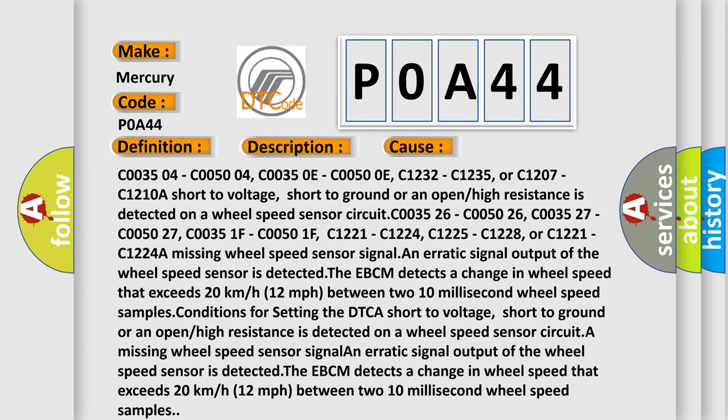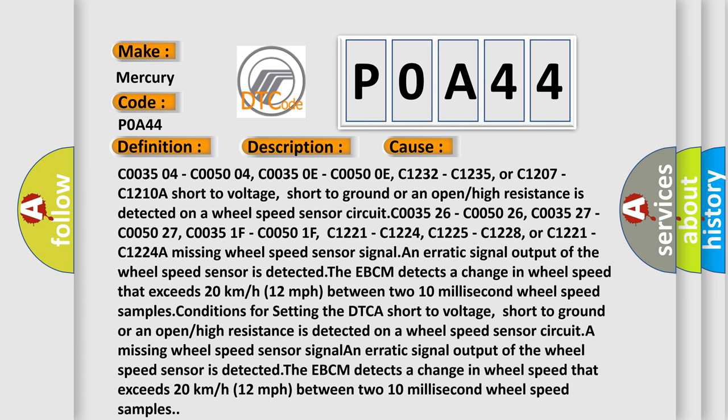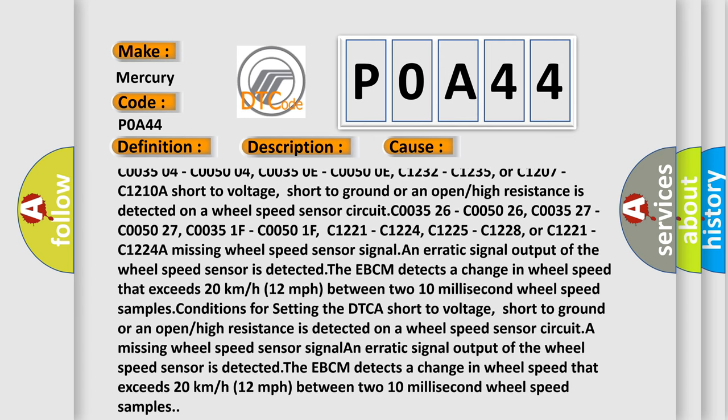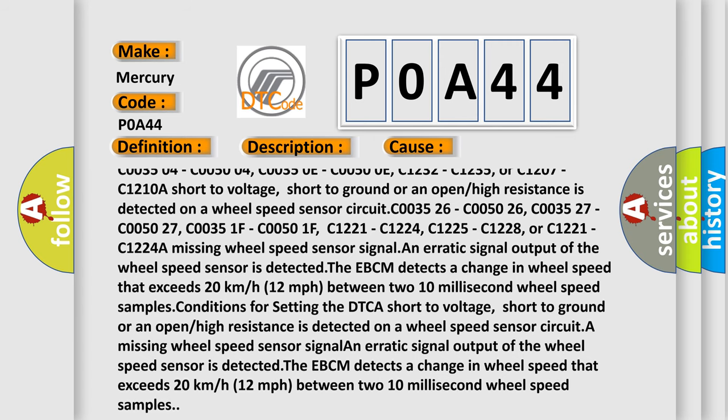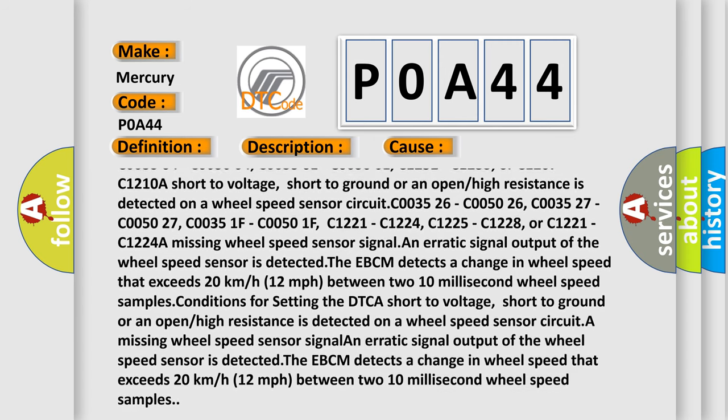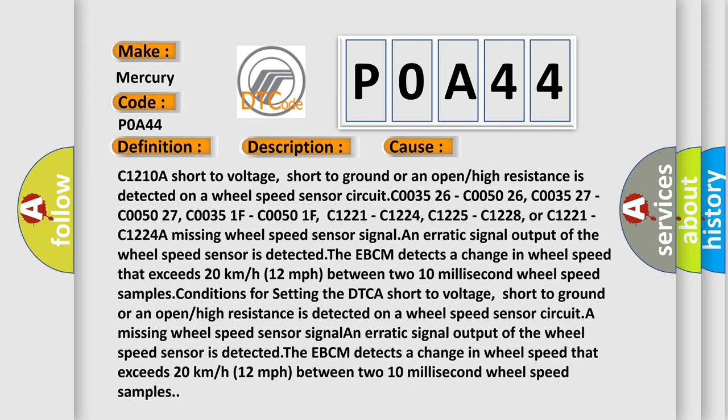C003504, C005004, C00350E, C00500E, C1232, C1235, or C1207, C1210. A short to voltage, short to ground, or an open or high resistance is detected on a wheel speed sensor circuit.